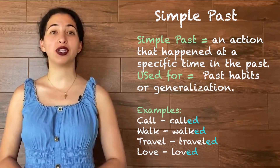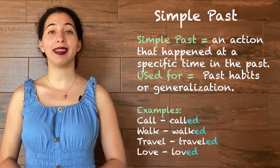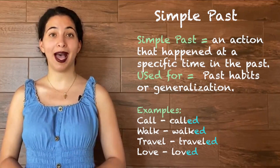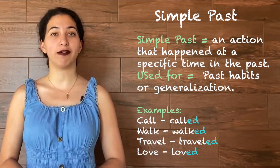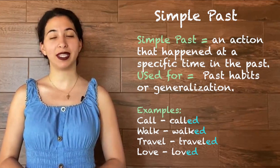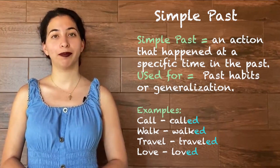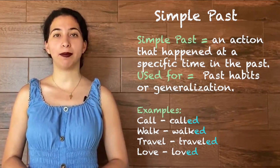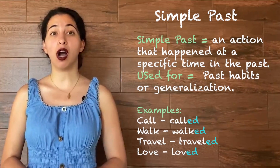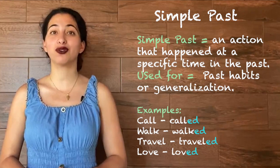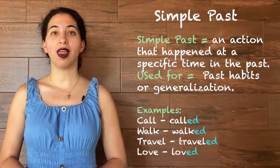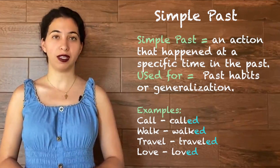If we want to use a verb in the simple past, we add -ed to the end of the verb. For example: call → called, walk → walked, travel → traveled, love → loved.